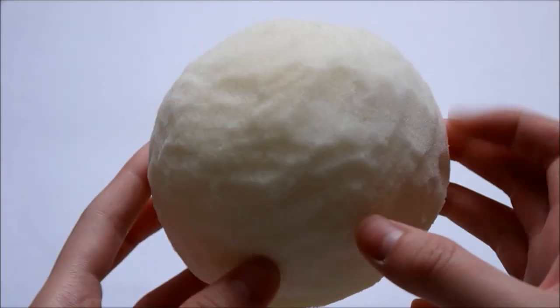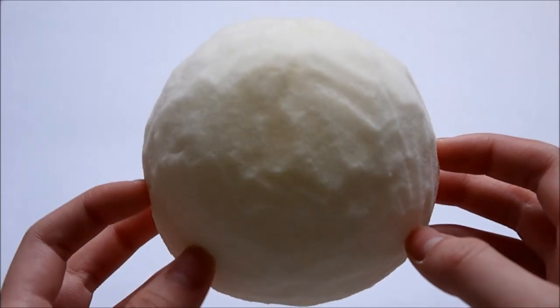So once you've cut out a bun shape, you're just going to cut out the lines that will make it look like a melon bun.